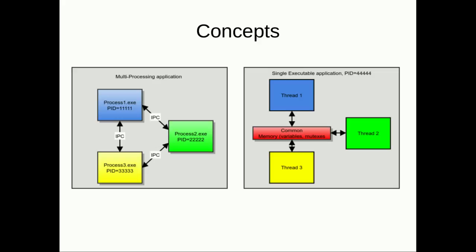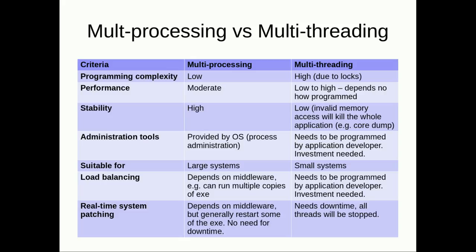The programmer handles locking and synchronization of threads, which is a lot of work. Looking at a comparison matrix: programming complexity for multiprocessing is low because the middleware provides an API for communication, each executable can be single-threaded, use global variables, and do one thing at a time.